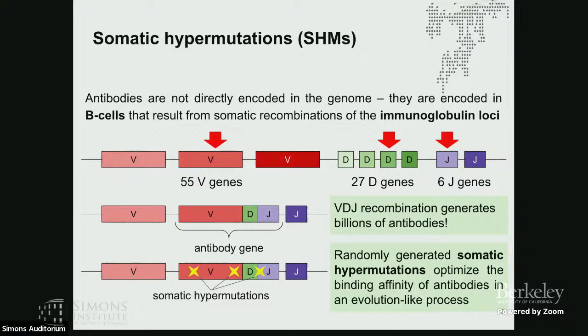Once an antibody binds an antigen, the immune system marks it as useful and produces multiple copies of the corresponding B cell, but also introduces small changes inside antibody genes to improve binding properties. This process can be viewed as an evolutionary process that happens really fast — within just several days, a single antibody can be turned into a family of antibodies. Additional processes control and eliminate bad antibodies while promoting good ones.